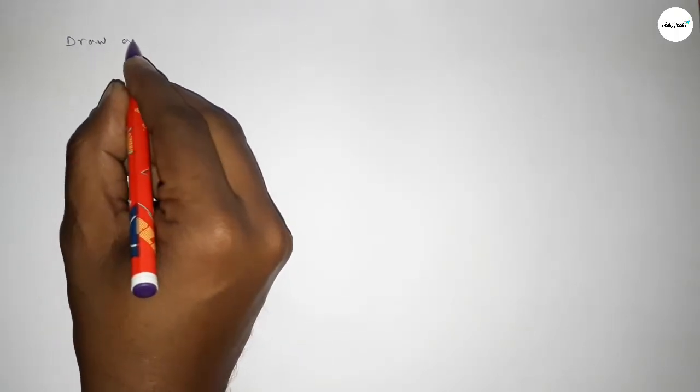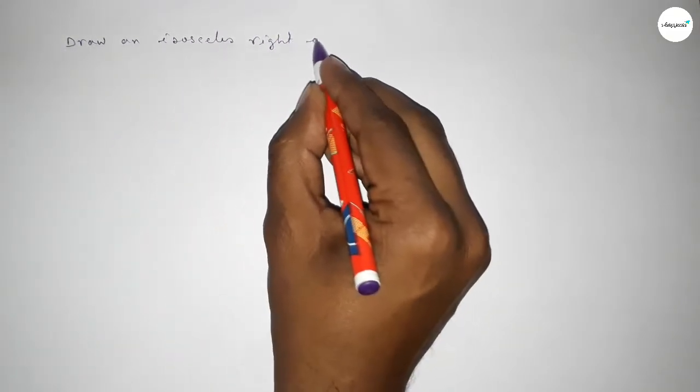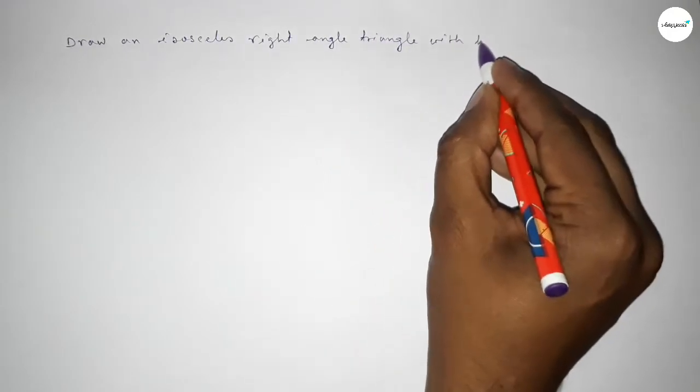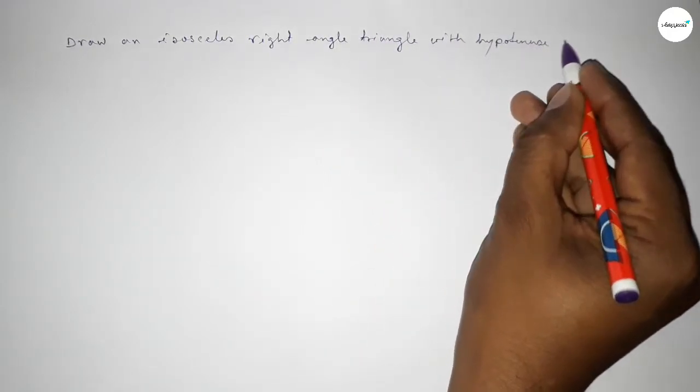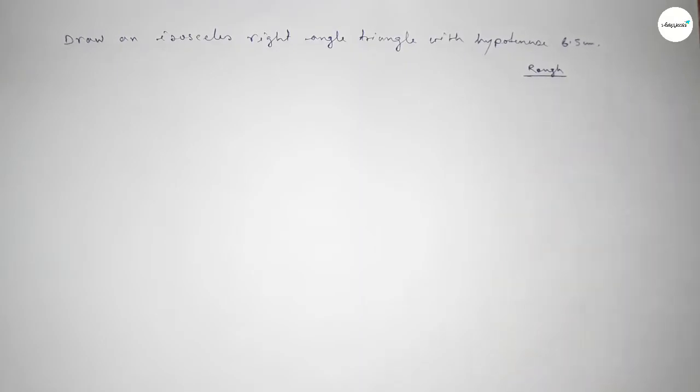Hi everyone, welcome to essay share classes. Today in this video we have to draw an isosceles right angle triangle with given only hypotenuse 6.5 centimeter. So let's start the video. First of all, roughly discussing here some calculation first.